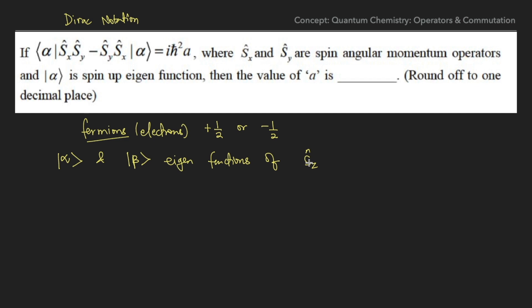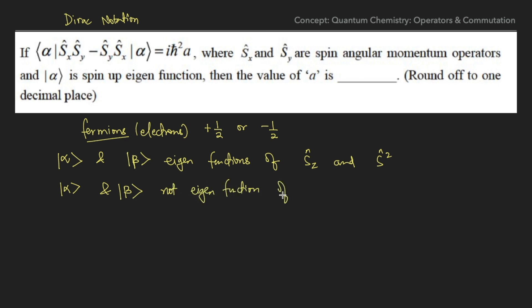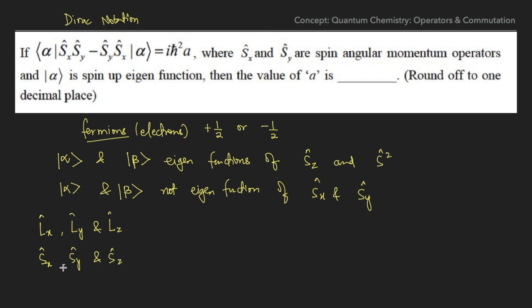We have two eigenfunctions: alpha and beta. These are eigenfunctions of the Sz operator — the spin angular momentum along the z-axis — and also eigenfunctions of the S² operator. Alpha and beta are not eigenfunctions of Sx and Sy. Similarly to how you've studied angular momentum operators Lx, Ly, and Lz (also known as ladder operators), the same properties are followed by Sx, Sy, and Sz — these are the spin angular momentum operators.